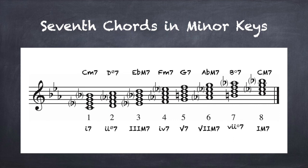In minor key signatures, these chords are arranged differently, plus the fully diminished seven chord is added. Memorize the labels and their patterns below. Thank you for joining us today for a Music Theory Minute. Be sure to like and subscribe.